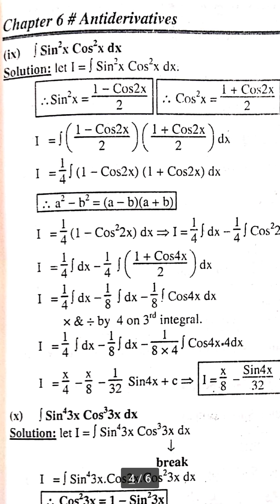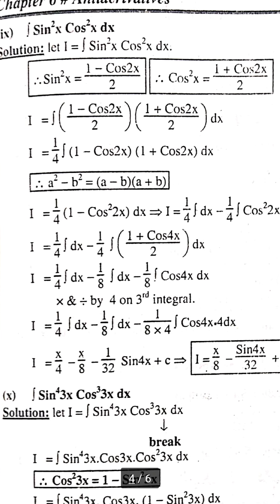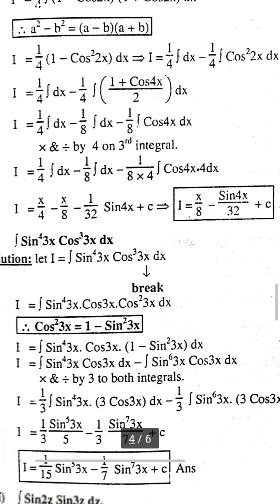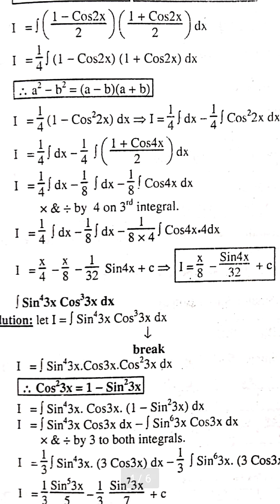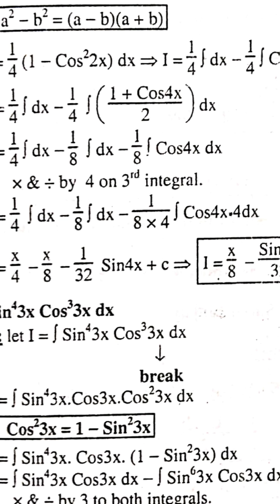Number 9: integration of sin²x · cos²x dx. Using identities: cos²x = (1 + cos2x)/2 and sin²x = (1 − cos2x)/2. Multiplying them gives (1 − cos²2x)/4. Applying cos²2x = (1 + cos4x)/2 and integrating: x/4 − x/8 − sin4x/32 + C.